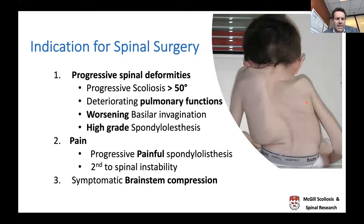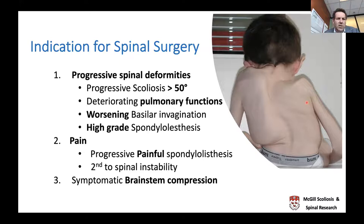Another trigger for surgery—sometimes even before reaching 50 degrees—is progressive loss of pulmonary function. As the spine becomes shorter with a severe lumbar curve, abdominal contents are pushed up into the thoracic cage and lung function deteriorates even without the curve exceeding 50 degrees. Similarly, progressive basilar invagination that is documented to be worsening should be addressed surgically sooner rather than later, as should progressive high-grade spondylolisthesis.